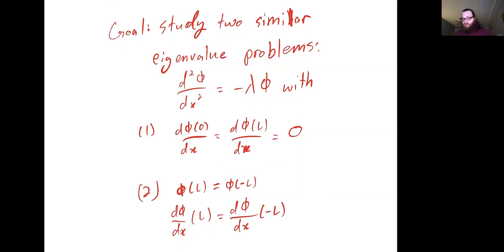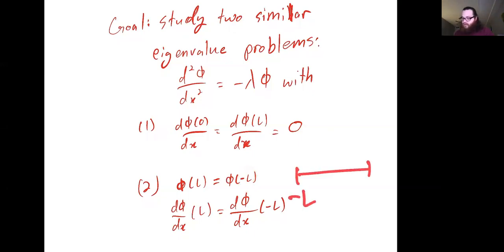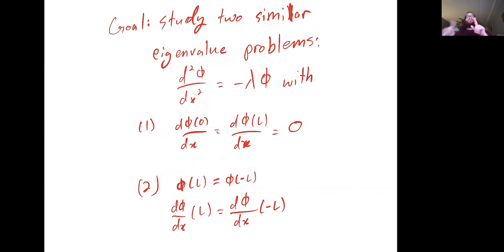The other eigenvalue problem that we're going to solve has a slightly more interesting collection of boundary values. Here we're evaluating one of these functions at negative L, so in a sense our rod will be from negative L to L with x equals zero in the middle. We're saying that the value of the function is equal at the two ends of the rod, as well as the derivative is equal at both ends of the rod.